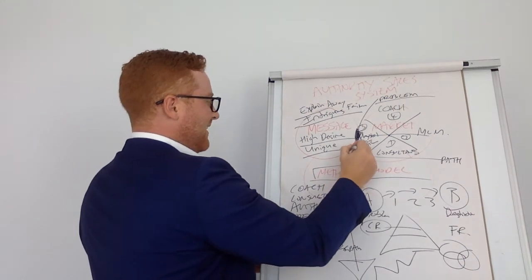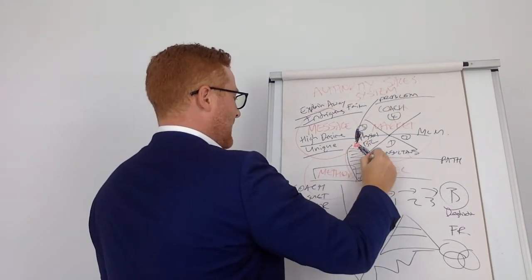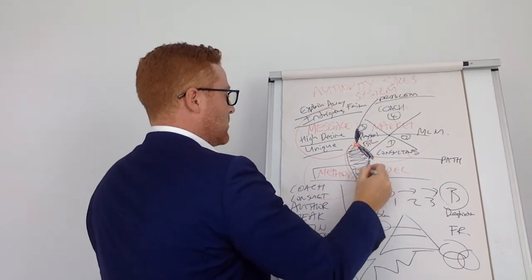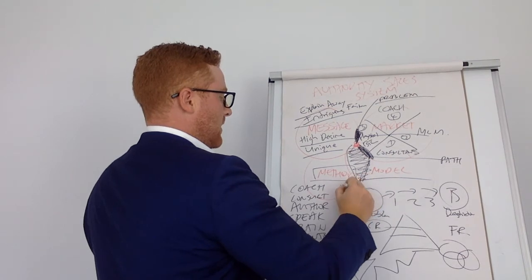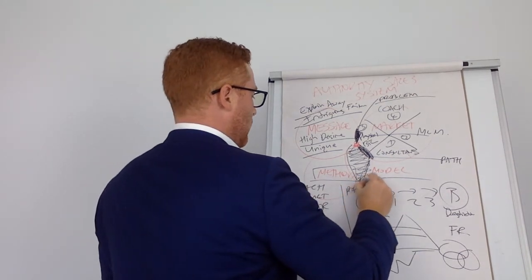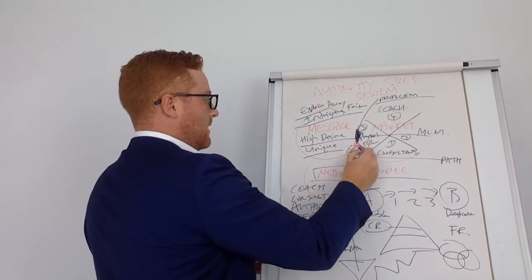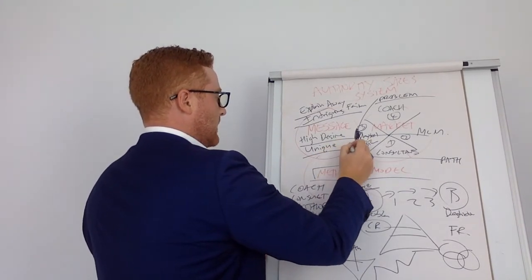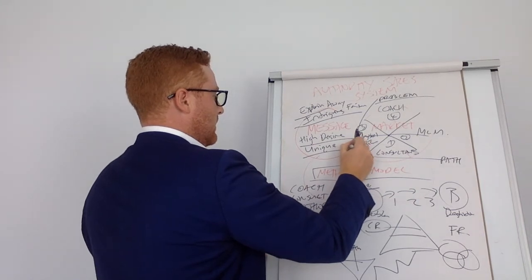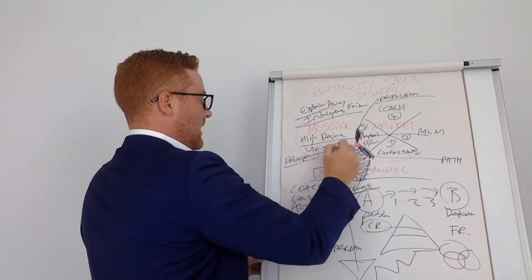Between model and method in here, in between model and method, this here is their preference. What they prefer to buy from you. How do they prefer? And then lastly, this one here that goes in here is the promise. The promise of the message and how it's delivered.